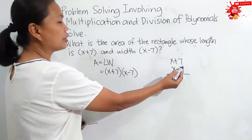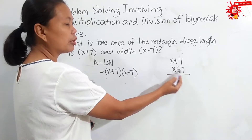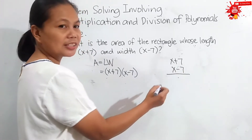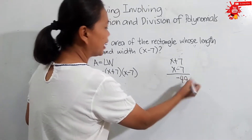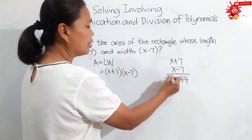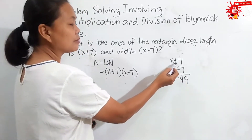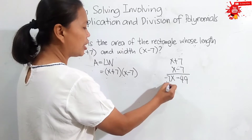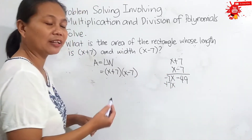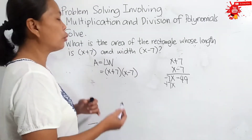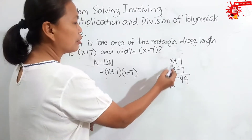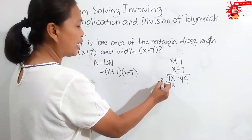First, we distribute negative 7 and multiply it to positive 7. Negative 7 times positive 7 gives negative 49. Then, negative 7 times x is negative 7x. Then, x times positive 7 is positive 7x. Then, x times x — remember that when multiplying with the same base, we add their corresponding exponents, so we have x raised to 1 plus 1, which is x squared.